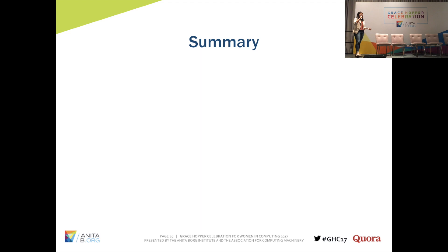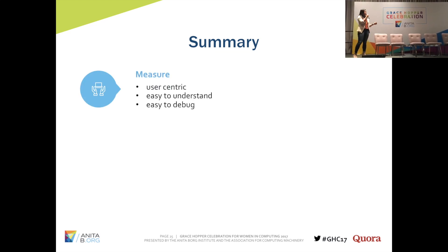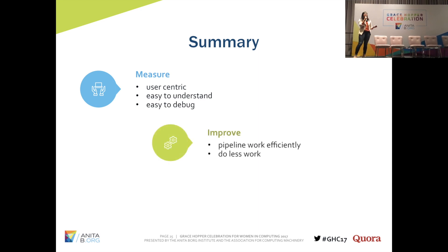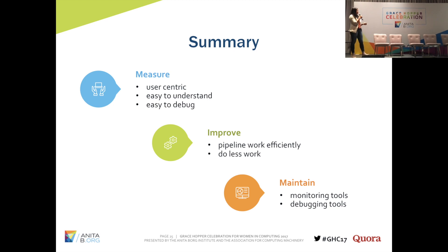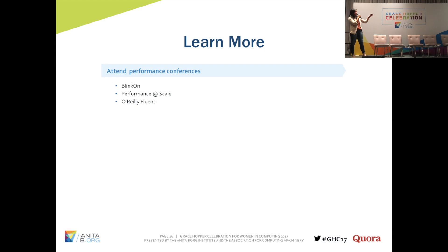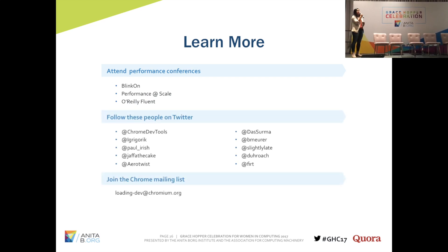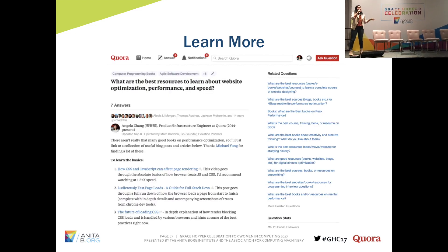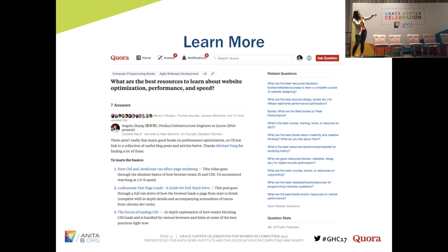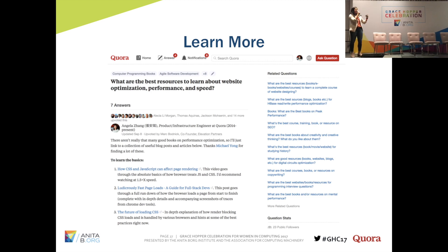In summary, over the last six years we've learned: to work on speed, you must measure it with user-centric, easy-to-understand, easy-to-debug metrics; you can make improvements by pipelining and parallelizing work more efficiently and by sending fewer bytes; and you need to maintain speed with a suite of monitoring and debugging tools to automatically catch regressions. If you want to learn more, there are conferences, relevant Twitter accounts, and the Chrome mailing list. I also write performance-related answers on Quora including links to all these resources and deeper articles on the topics mentioned.